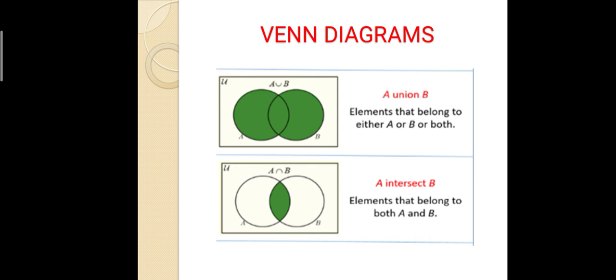Observe the Venn diagrams. The first one is A Union B and the second one is A Intersection B. In the first diagram, both sets are shaded — elements that belong to either A or B or both. Shaded parts in both sets means this is A Union B. In the second diagram, only the common overlapping part is shaded — this is A Intersection B.